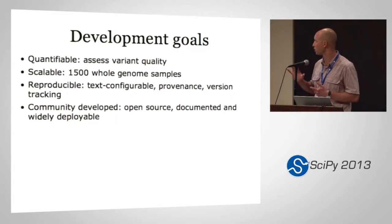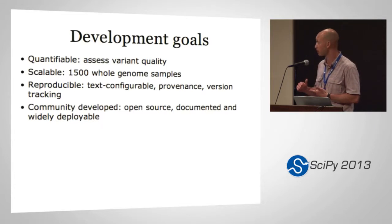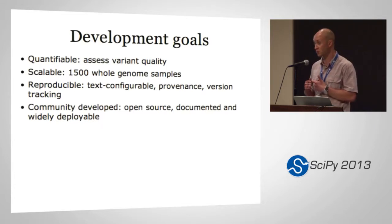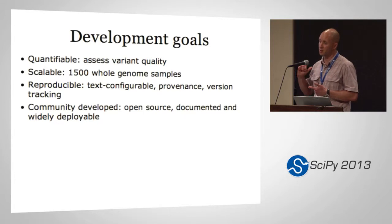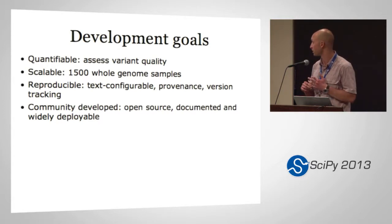I'd like to talk about four development goals for this project. One is that it's quantifiable — you can assess variant quality. Second is that it's scalable; we're doing projects with 1,500 whole genome samples, so it scales to really huge things. Third is that it's reproducible — your input file tells you what you did, it creates provenance of all the command lines that are run, so you know everything that happened and all the software versions you're using.